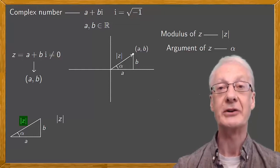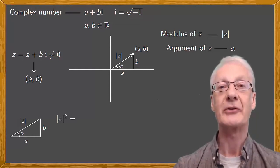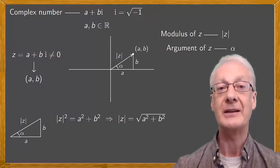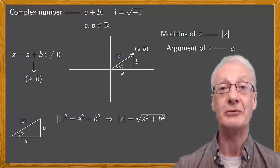The hypotenuse, which is the modulus of z squared, is equal to the sum of the squares of the other two sides. In other words, a squared plus b squared. So the modulus of z equals the square root of a squared plus b squared.